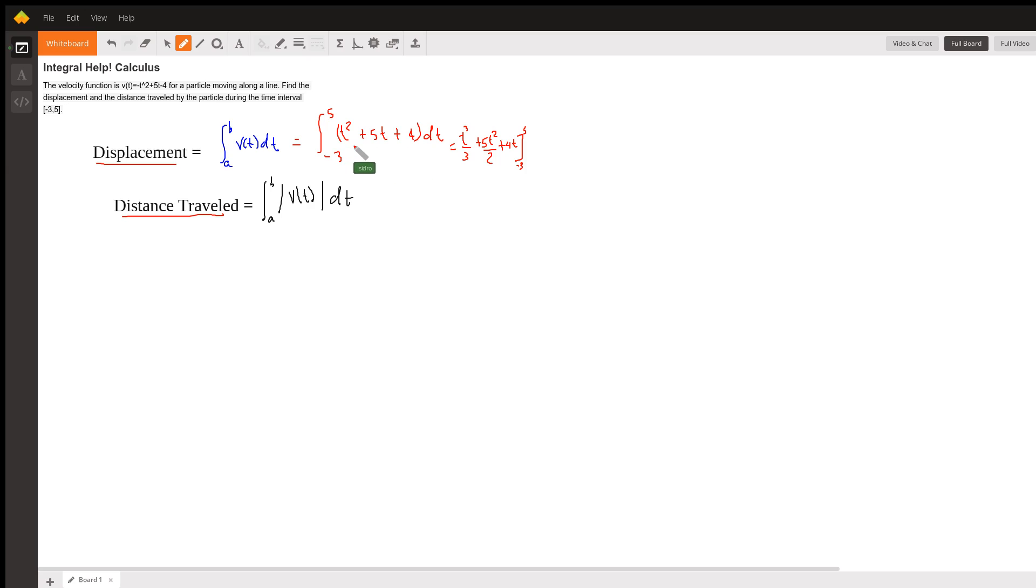The answer for that integral is t cubed over 3 plus 5t squared over 2 plus 4t. Now we're going to substitute the values into this formula.